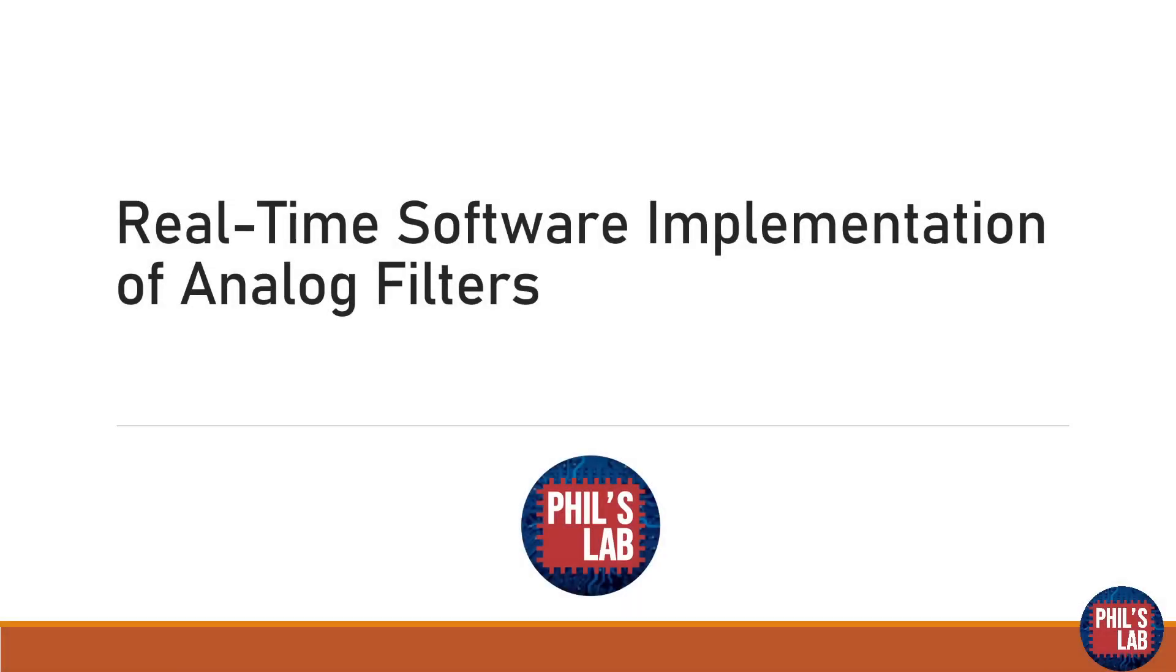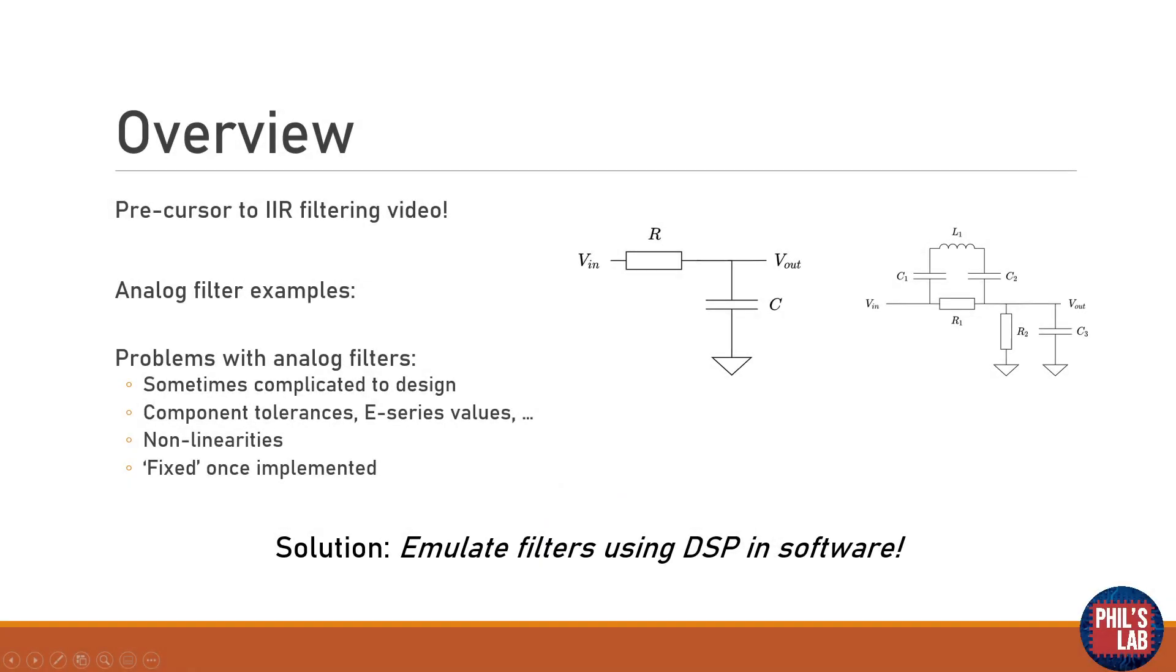In this video I'd like to talk about real-time software implementation of analog filters. In essence, how do we take electronic analog filters as prototypes, model them mathematically and then implement them in software on for example microcontrollers or DSPs. Here's an overview of what we'll be covering. In essence this video is a precursor to the IIR filtering video which is going to be coming out soon, which follows on the FIR filter video which you can see on my channel.